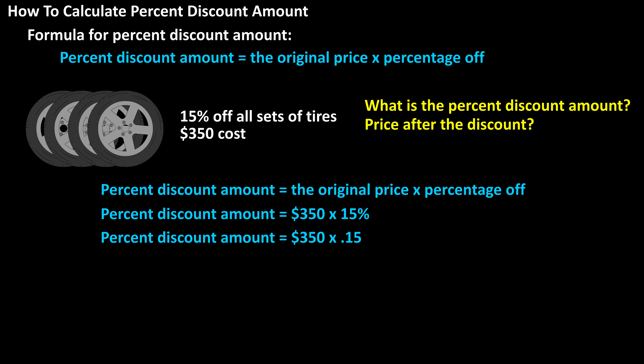$350 times 0.15 equals $52.50, and that is the discount amount, which answers the first question.